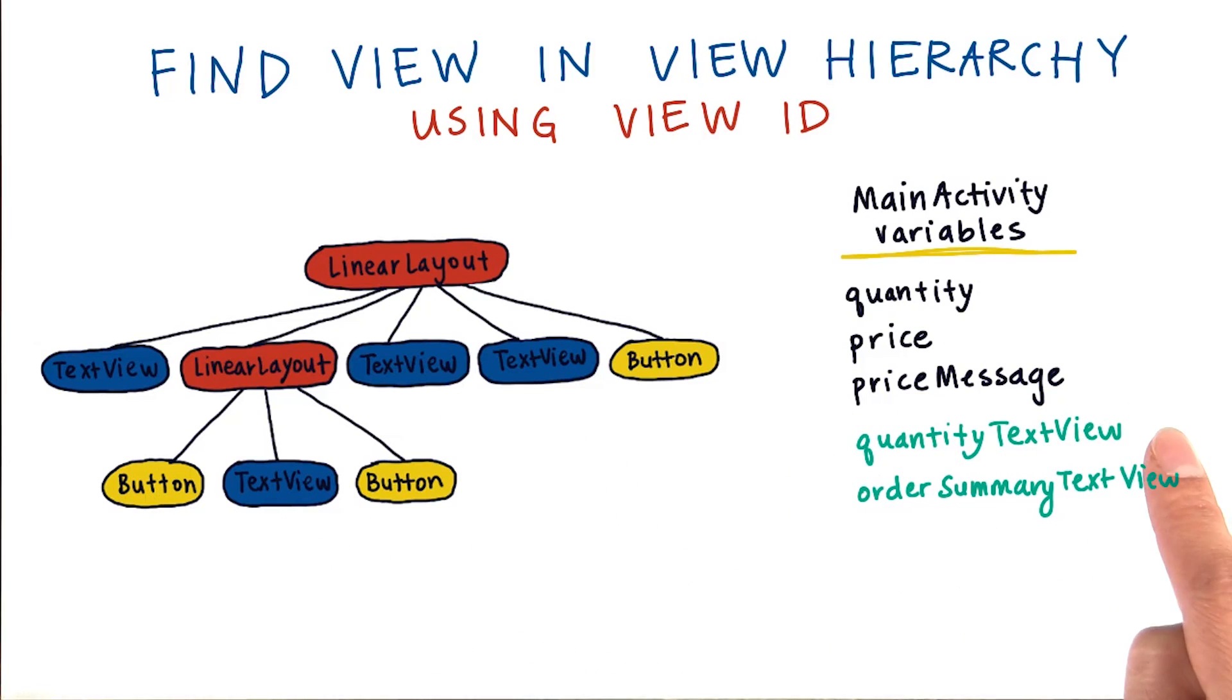For example, we can create a variable called quantity text view that would refer to this text view here. If you click on the plus or minus buttons in the UI, then you can change the text view text to show a different number. We can also have a variable called order summary text view that points to this text view.